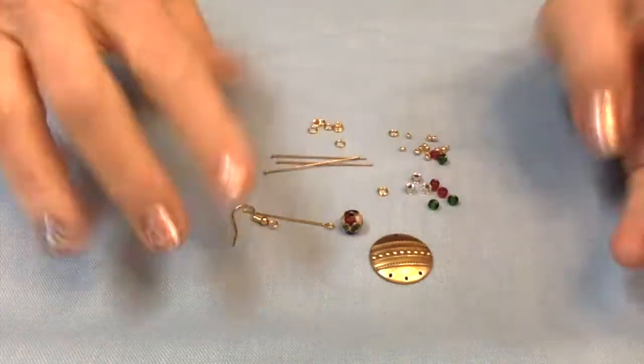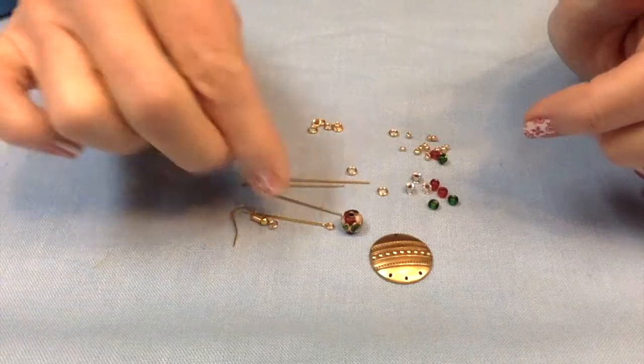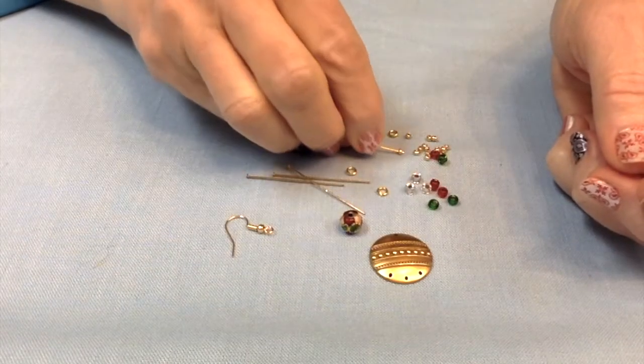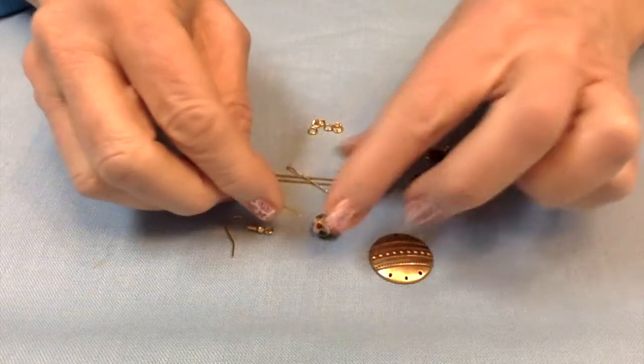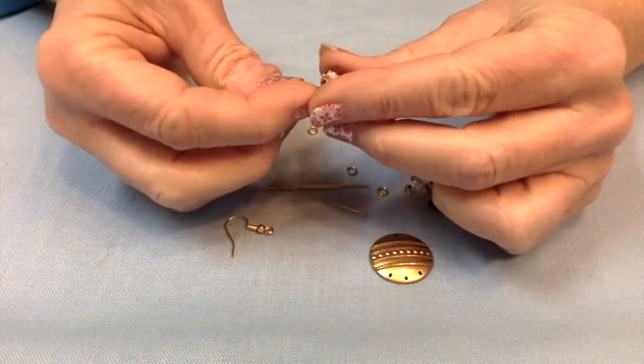The first thing I want to do is go ahead and get all my beads onto their little pins. So I'm going to use the little golden tone seed beads to flank the cloisonne here.